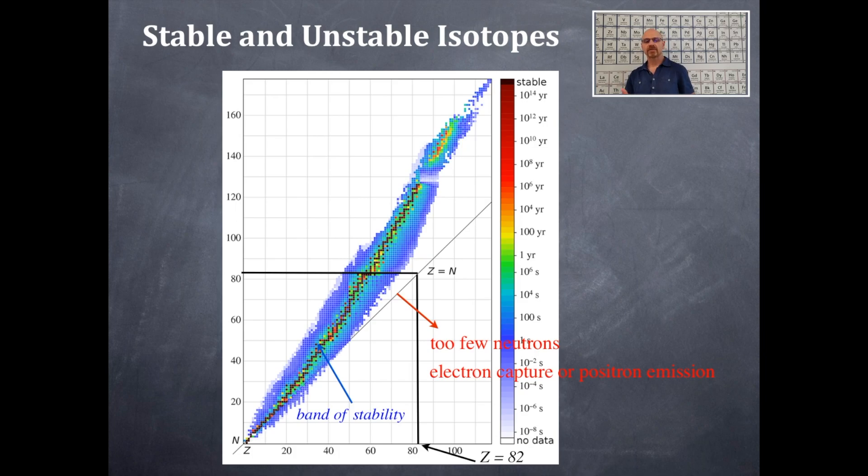This one here is if it's on this side of that band of stability, then there are too few neutrons, and you end up with electron capture or positron emissions. If it's on the other side of that band of stability, the black line that's in the middle, you have too many neutrons, and you have beta emissions.